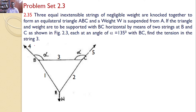Find the tension in string 3. There are three strings 1, 2, and 3. All three strings are knotted together at A, B, and C. A weight W is attached and the total system is to be supported by two strings placed at B and C. Our interest is to find the tension in string 3.